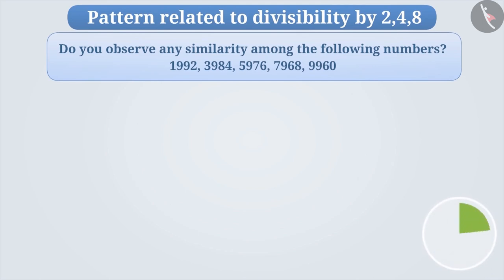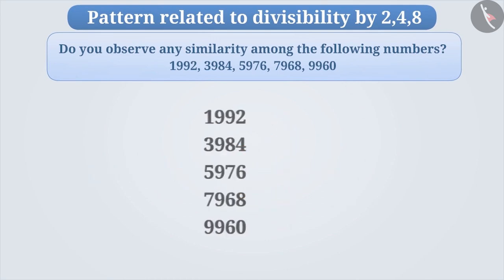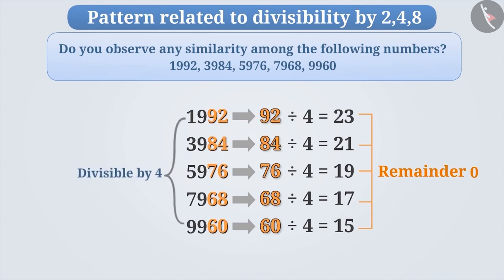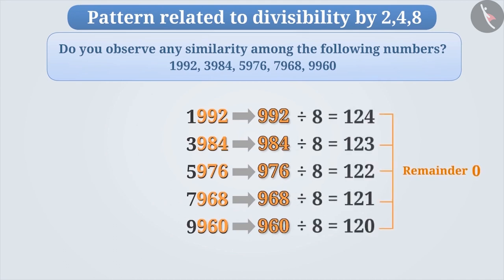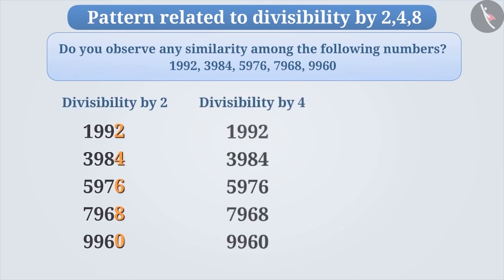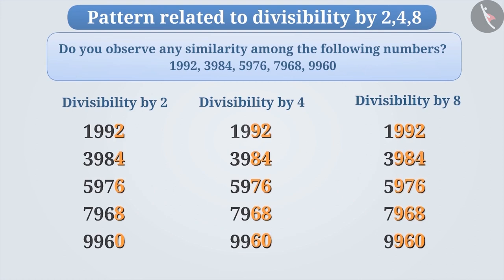Let's see some interesting patterns. Do you observe any similarity among the following numbers? The last digit of all the numbers is even, therefore all these numbers are divisible by 2. If we observe the number formed by the last two digits of these numbers, then they are divisible by 4, so these numbers are also divisible by 4. Similarly, if we observe the number formed by the last three digits of these numbers, then they are divisible by 8, and therefore the given numbers are divisible by 8 as well.